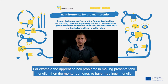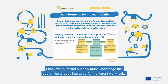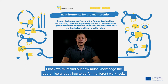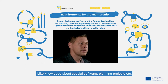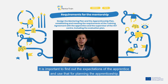On this picture we see a simplified process diagram showing how to design a mentoring and apprenticeship plan. Firstly, we must find out how much knowledge the apprentice already has to perform different work tasks, such as knowledge about special software, planning projects, and so on.